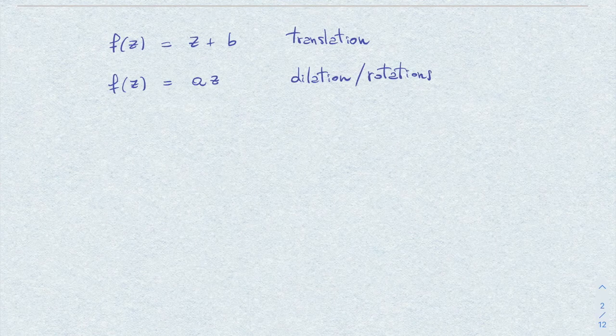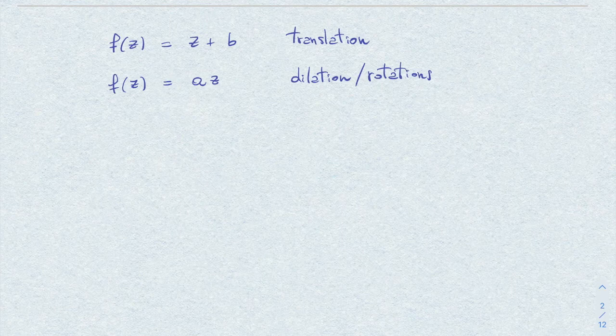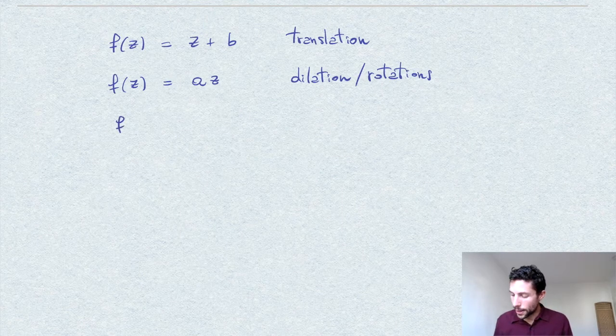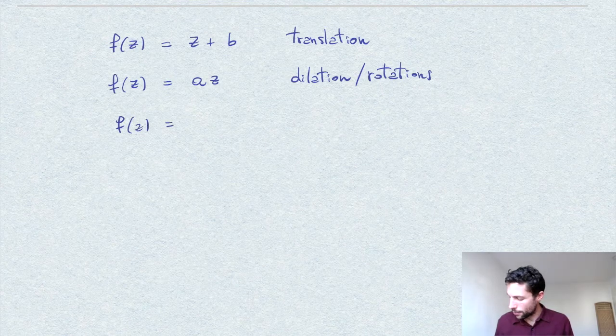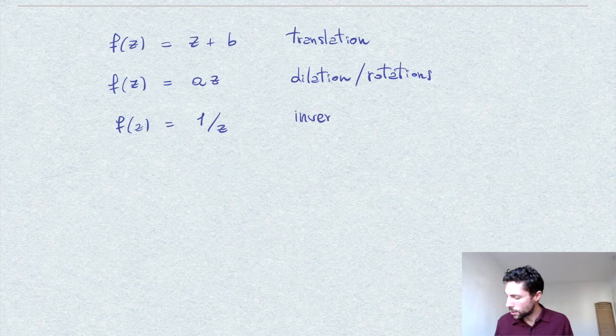or also rotations in the case that A is a unitary complex number. Finally, another special form for F is 1 over z. This is called inversion.